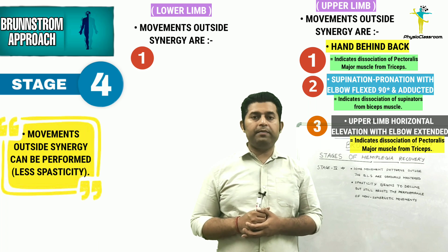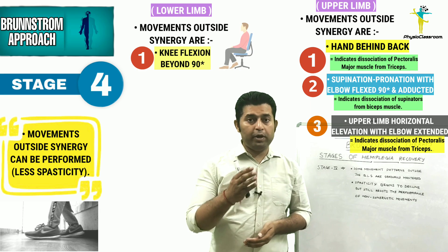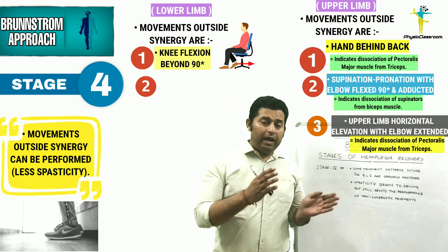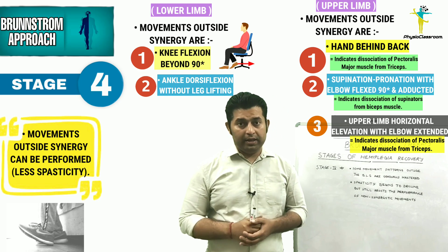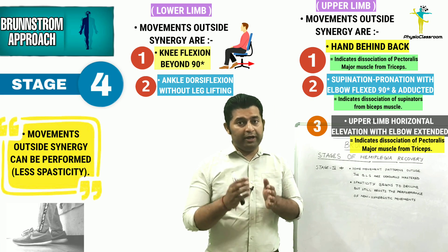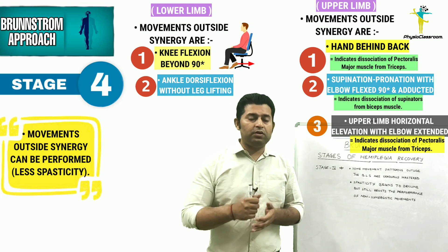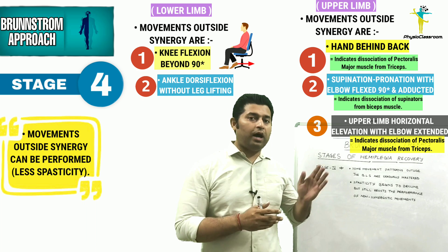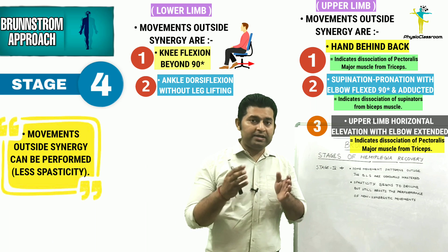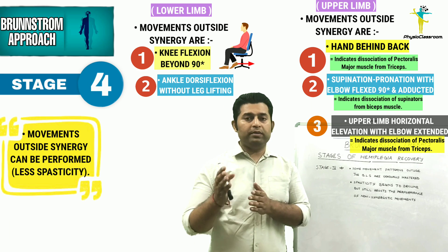For the lower limb, Brunström suggests that if the hemiplegic patient can perform knee flexion beyond 90 degrees in a sitting position by sliding the foot on the floor, and can perform ankle dorsiflexion in sitting without lifting the foot off the ground, the patient can be classified into Stage 4. It is also important to note that it is not necessary for both the upper limb and lower limb to be in the same stage of recovery simultaneously.